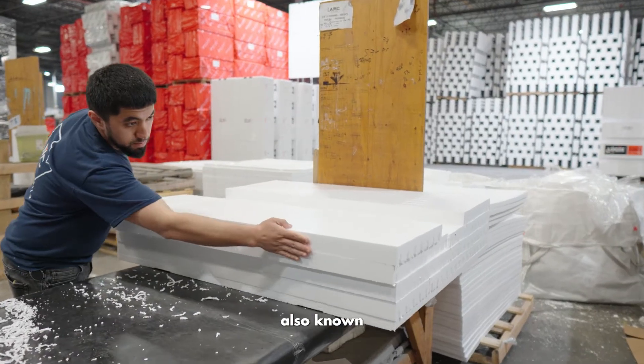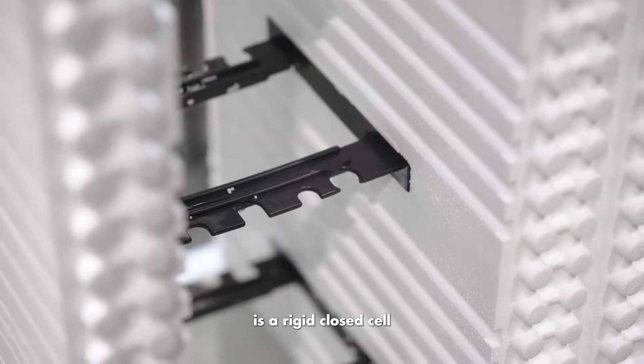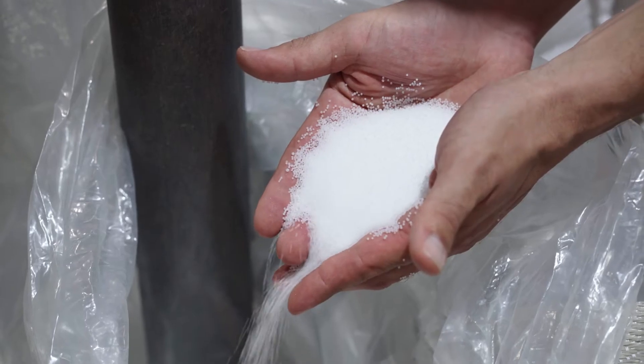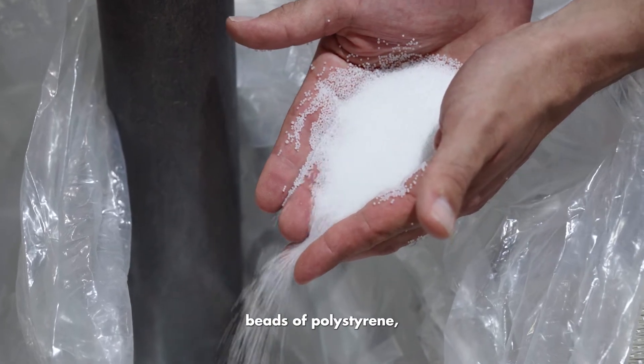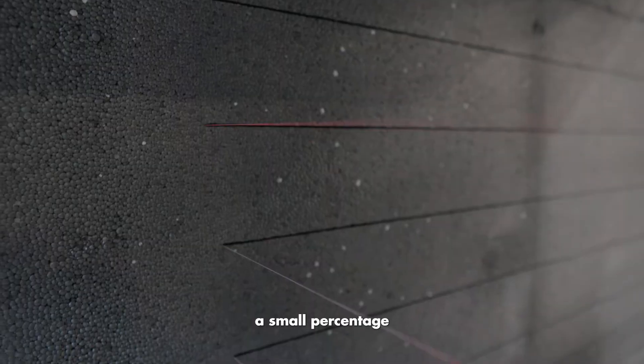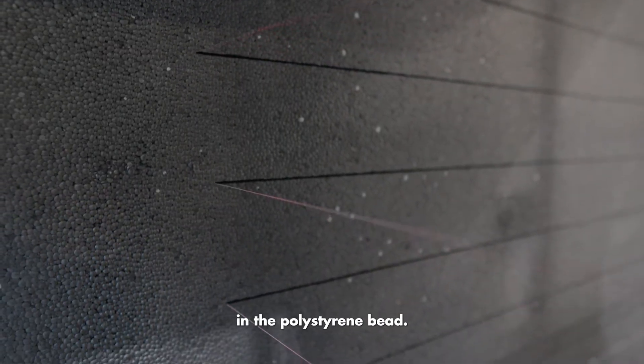Expanded polystyrene, also known as EPS, is a rigid closed cell thermoplastic foam material produced from solid beads of polystyrene, which is polymerized from styrene monomer and contains a small percentage of blowing agent in the polystyrene bead.